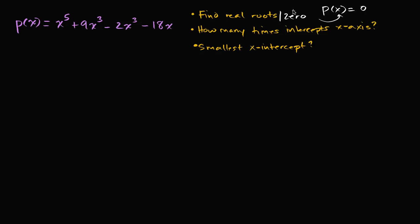We want the real ones. As you'll learn in the future, there are also going to be imaginary roots, or zeros — or there might be. And then we want to think about how many times we intercept the x-axis. However many unique real roots we have, that's how many times we are going to intercept the x-axis.